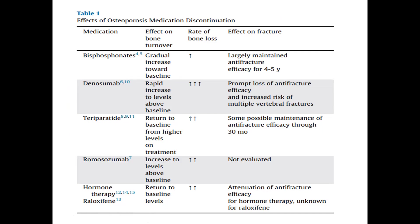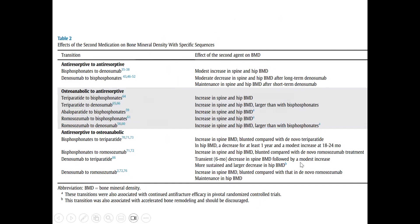For teriparatide discontinuation: bone turnover returns to baseline from higher levels, the rate of bone loss increases, and there is some possible maintenance of anti-fracture efficacy for around 30 months. For romosozumab discontinuation: bone turnover increases above baseline and the rate of bone loss increases rapidly; the effect on fracture risk after discontinuation has not yet been evaluated. For hormonal therapy and raloxifene: bone turnover returns to baseline, bone loss rate increases, and attenuation of anti-fracture efficacy is unknown.